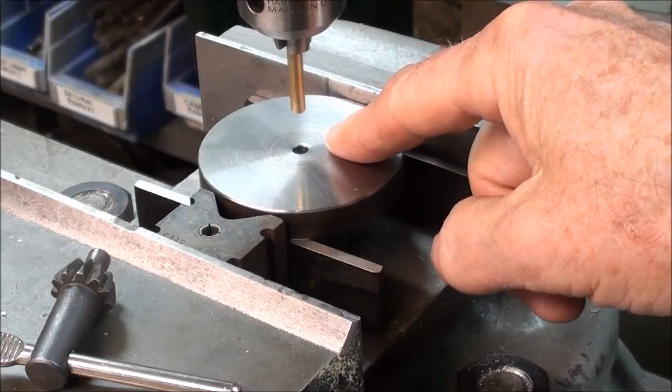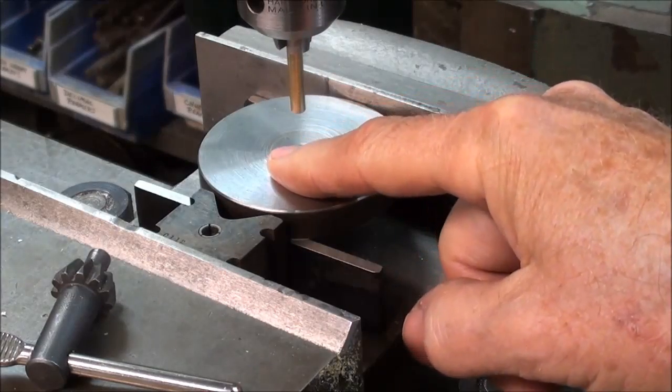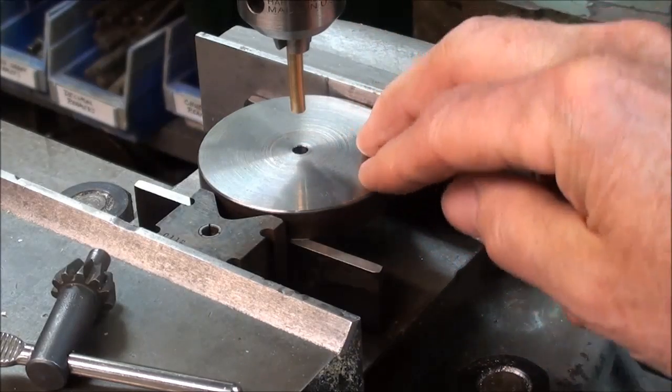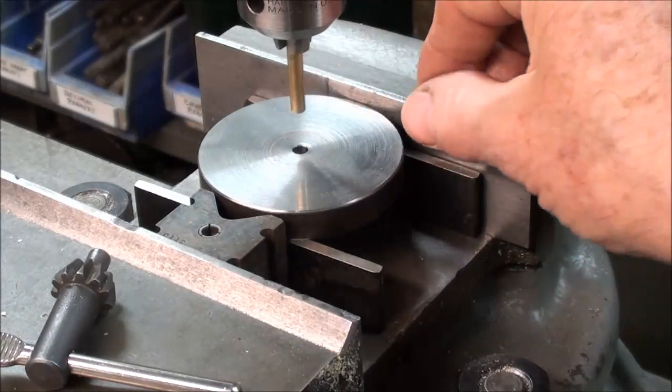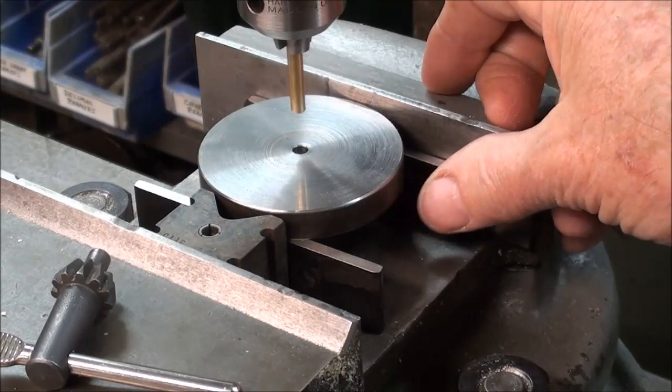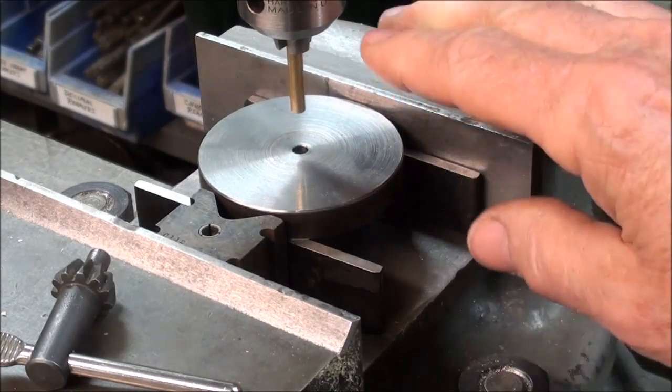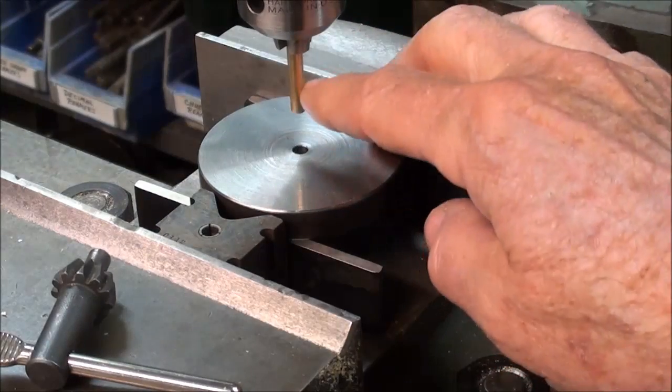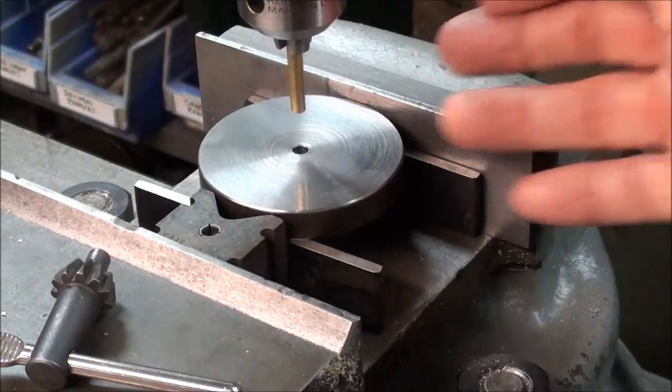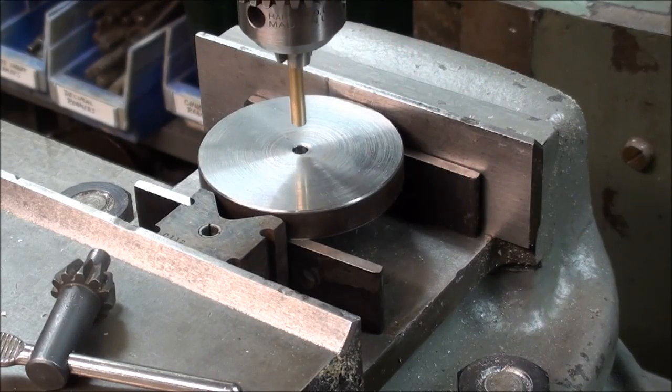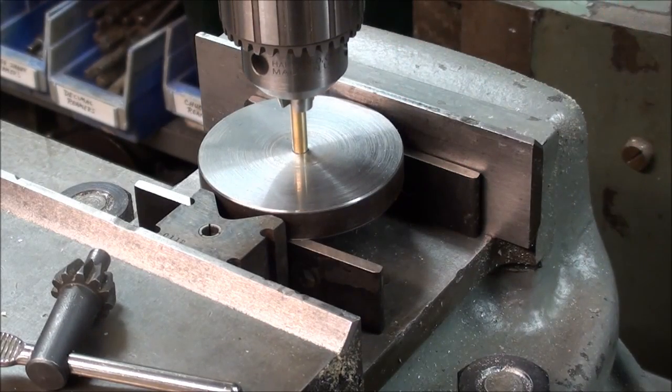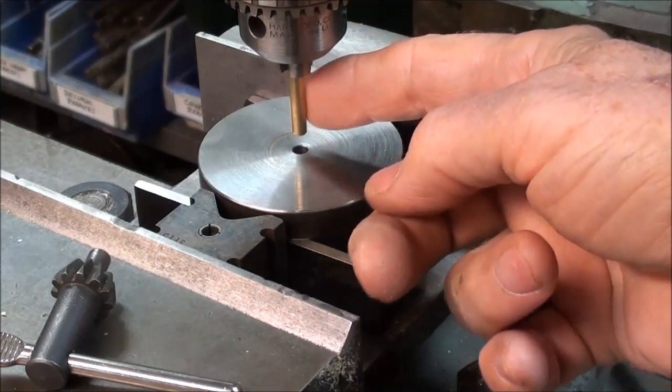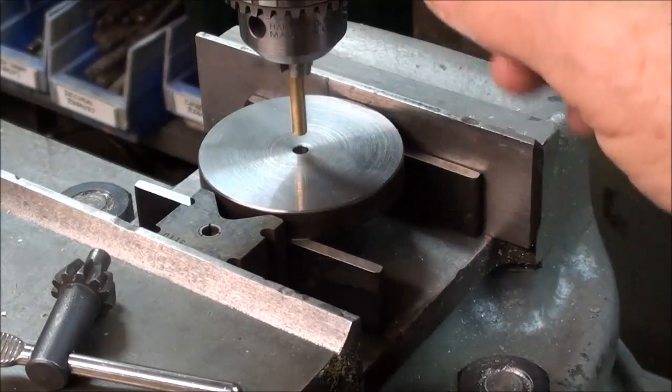Next, we need to locate the center of the hole with the spindle center. Now there are different ways of doing that. That can be indicated. It can be done with an edge finder or a wiggler, or whatever your preference is, but for this particular job, we want it to be accurate, but it doesn't have to be all that accurate, and this method here is sufficient as far as I'm concerned, and all I've done was move the table back and forth until I got a good close fit here with this rod, 3-sixteenths rod, that is in the drill chuck.